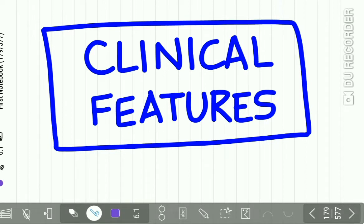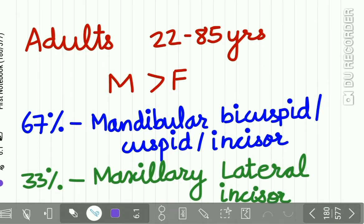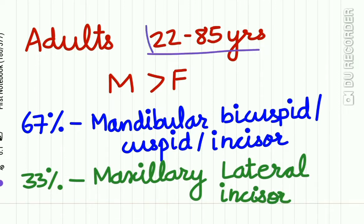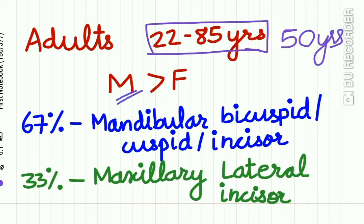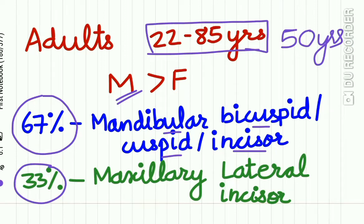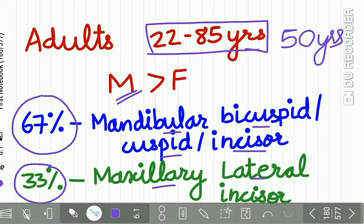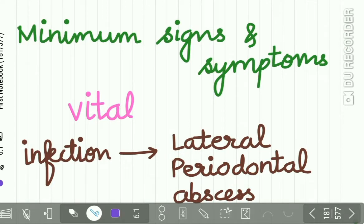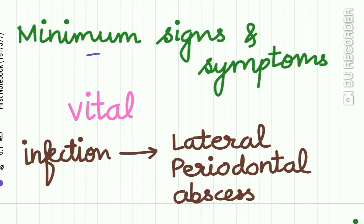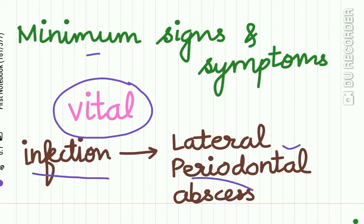The clinical features of the lateral periodontal cyst and Botryoid Odontogenic Cyst: they mostly occur in adults aged 22 to 85 years, with a mean age of 50 years. Males are affected more than females. 67% of cases occur in the mandibular bicuspid, cuspid, and incisor area, while only 33% occur in the maxillary lateral incisor area. The lesion shows minimum signs and symptoms and is found during routine radiographic examination. The associated tooth is vital. If infection occurs, the cyst may develop into an abscess.